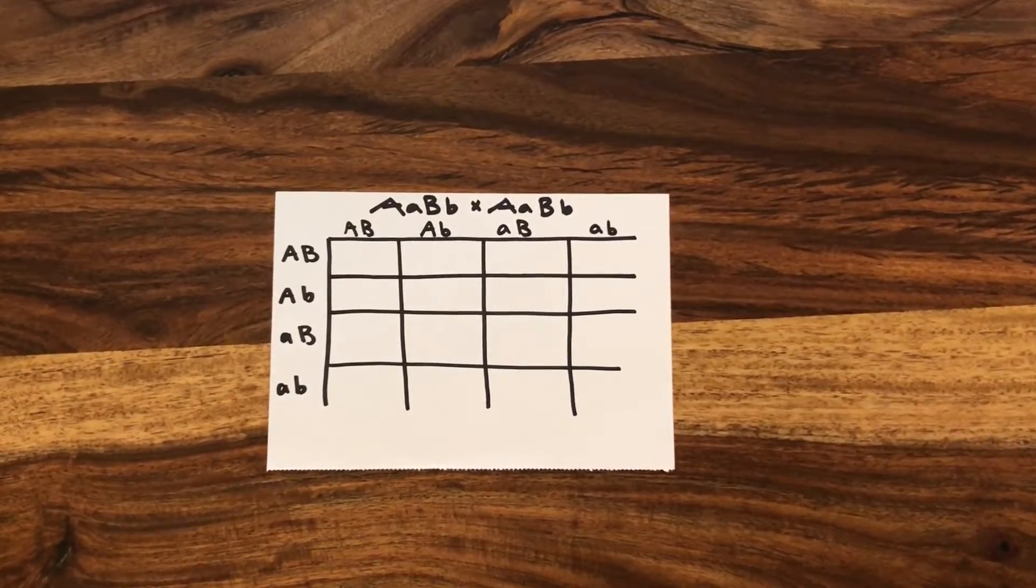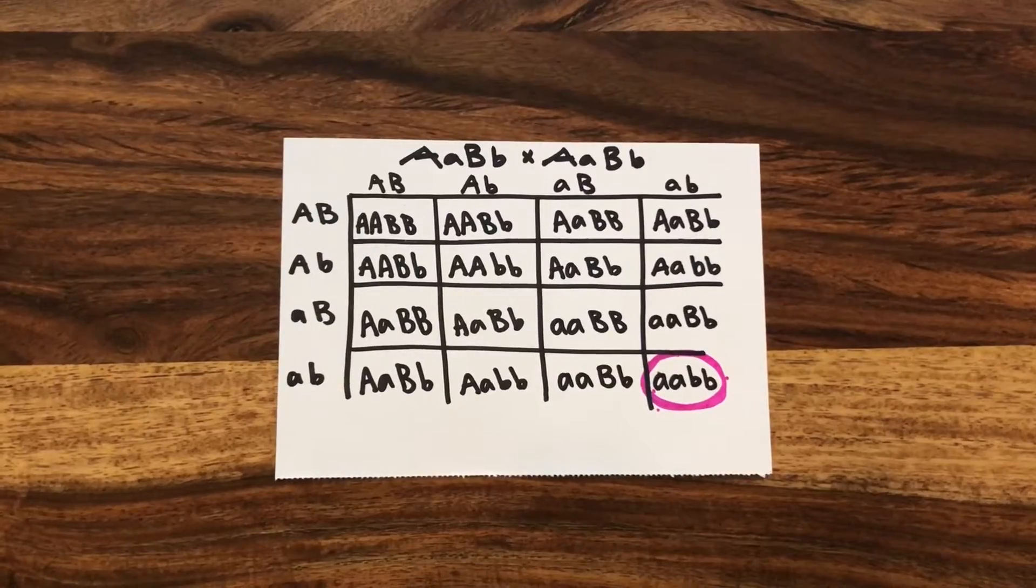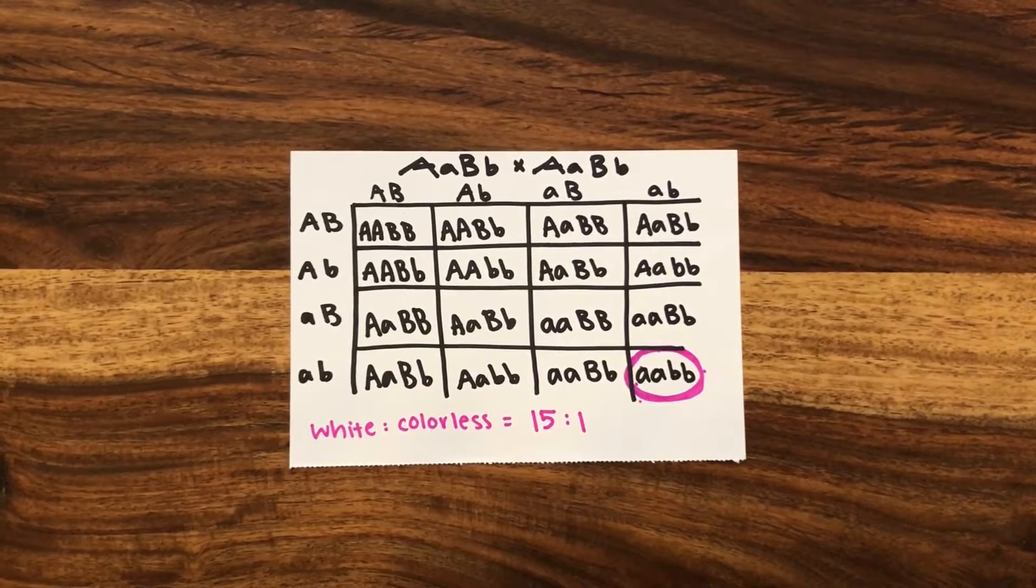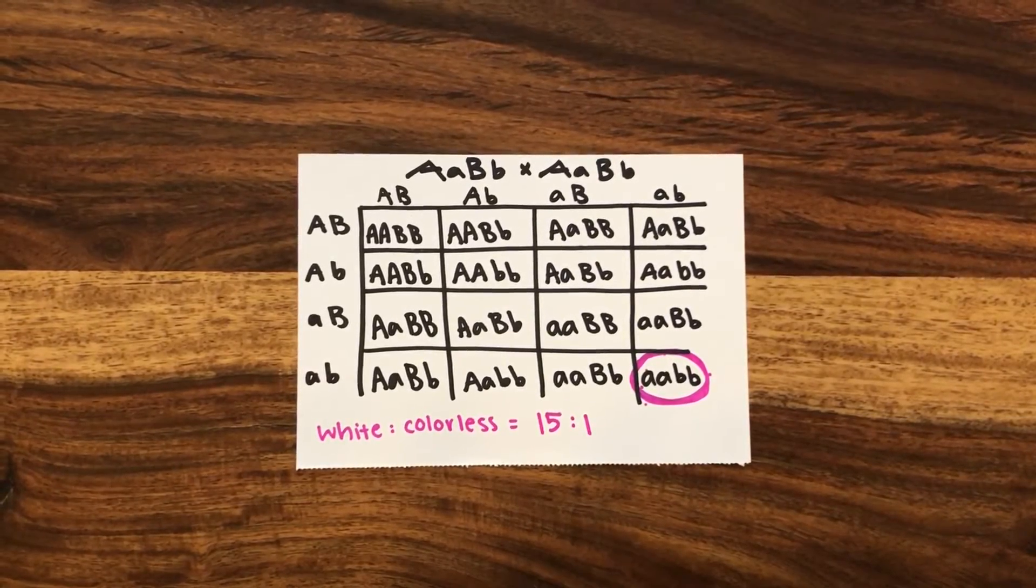If we were to do a dihybrid cross with this trait, only one out of 16 offspring would remain colorless, while the other 15 would have at least one uppercase allele between the two loci, giving them the white phenotype.